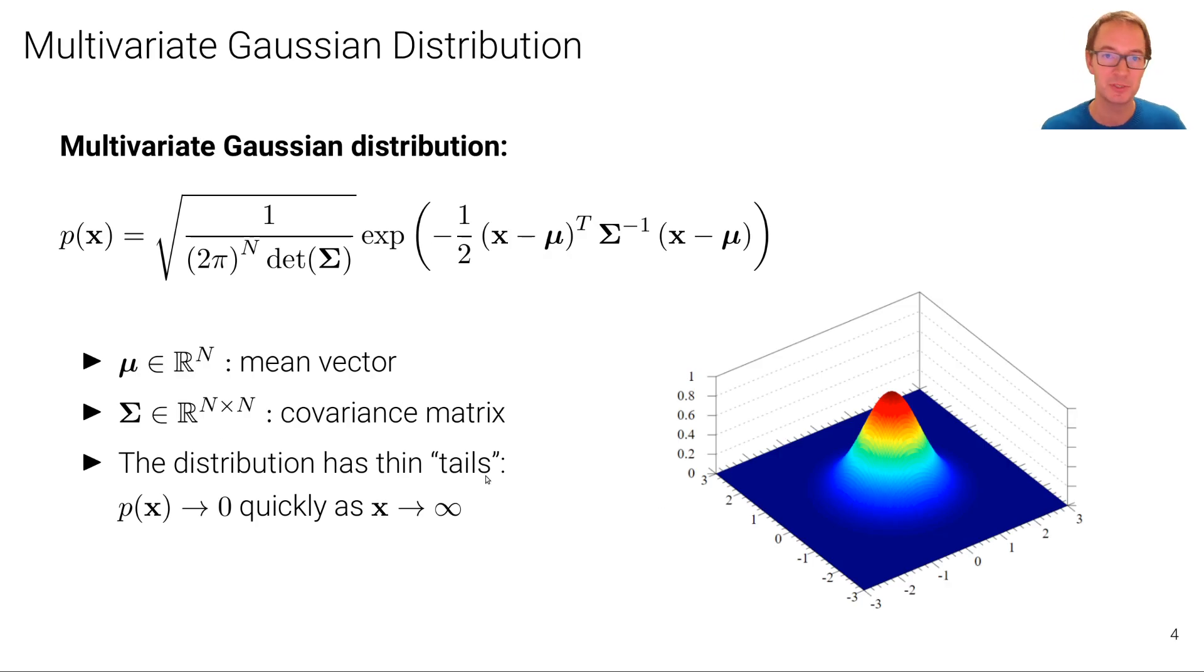The Gaussian distribution can be generalized to the multivariate Gaussian distribution, which is a Gaussian distribution on random variables of higher dimensionality. So let's assume we have a random vector x of dimensionality n, then of course we need to define also the mean vector of dimensionality n. And the mathematical expression for the multivariate Gaussian distribution is here. It's parametrized by the mean vector that has as many elements as the dimensionality of the input.